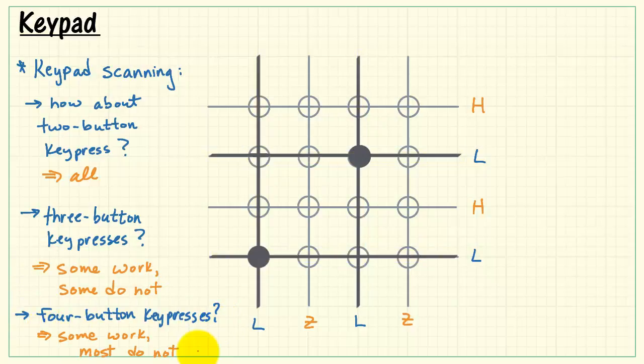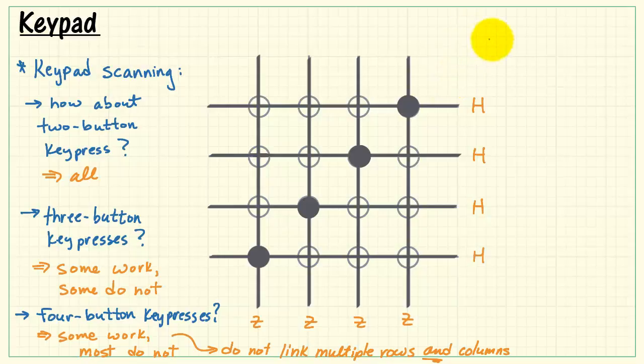You might try bumping this up one, looking at four button key presses. It's similar. Some work, most do not though. The key, again, is we look for combinations that do not link across multiple rows and multiple columns.